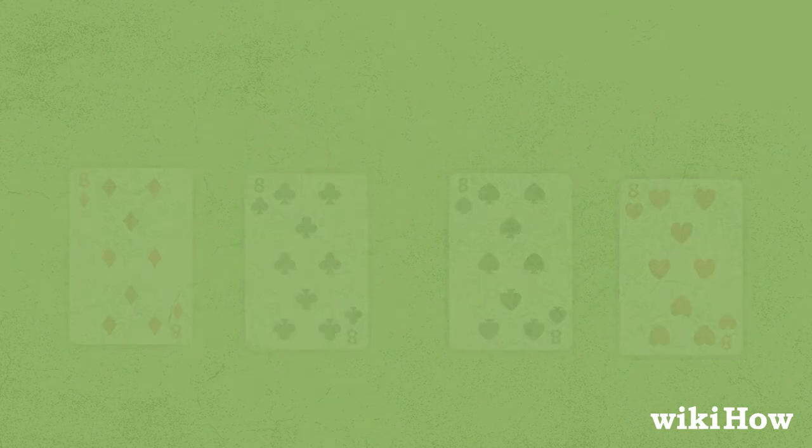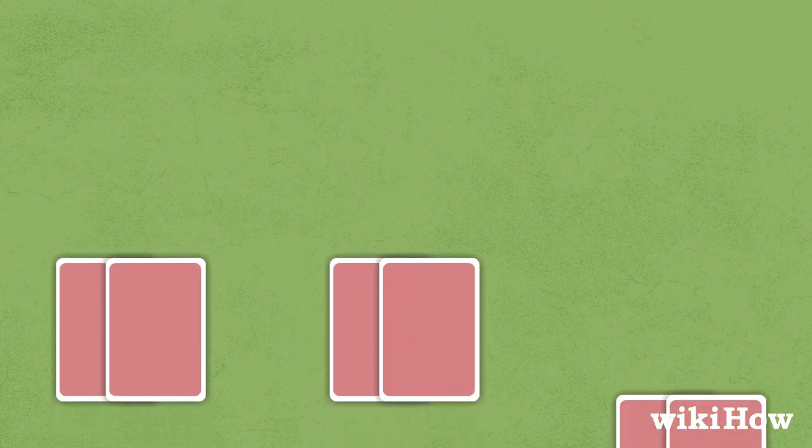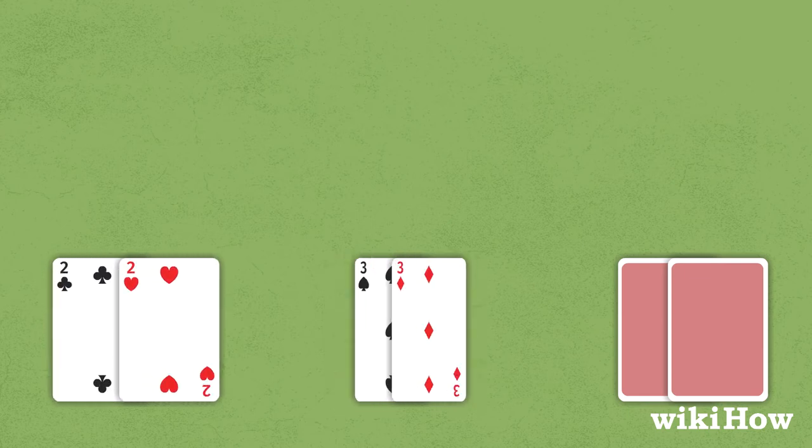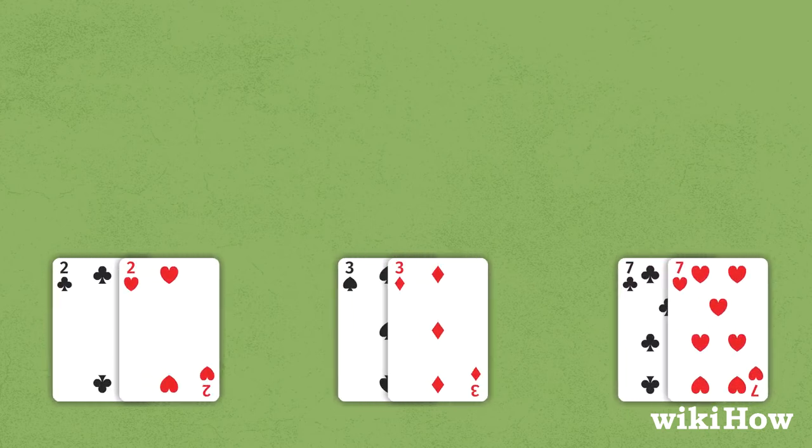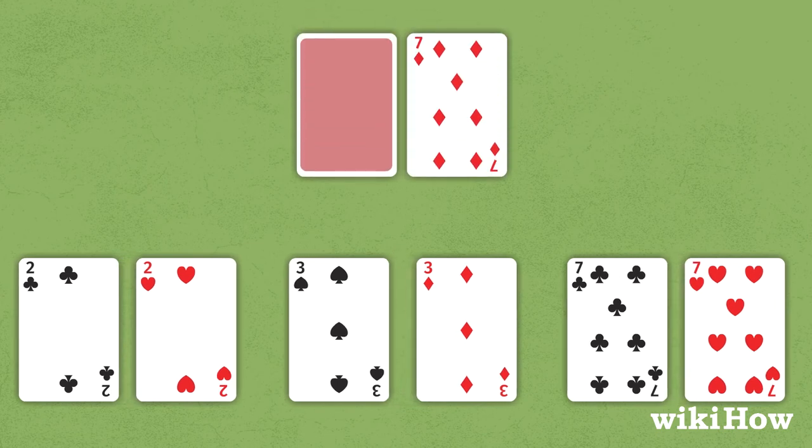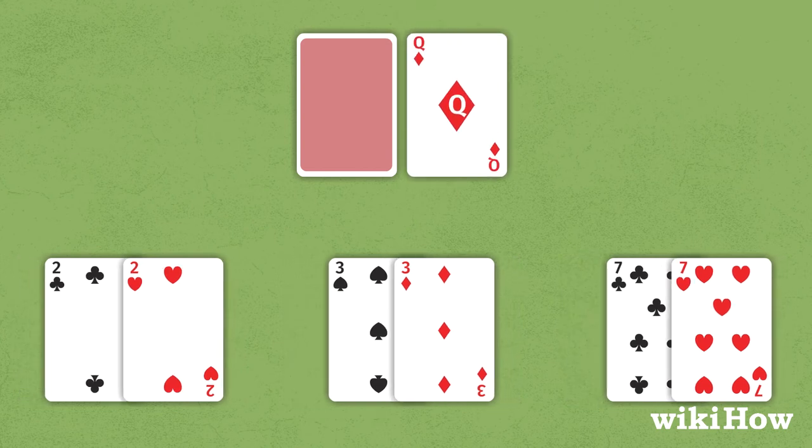On the other hand, there are some pairs where the dealer's hand should factor into your decision to split. For example, if you have a pair of 2s, 3s, or 7s, it's a good idea to split if the dealer shows a 7 or lower. However, if the dealer shows an 8 or higher, don't bother splitting.